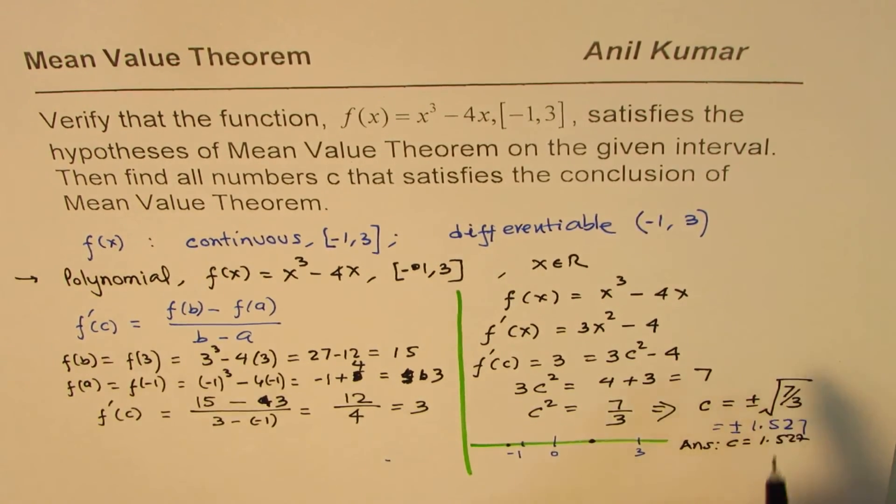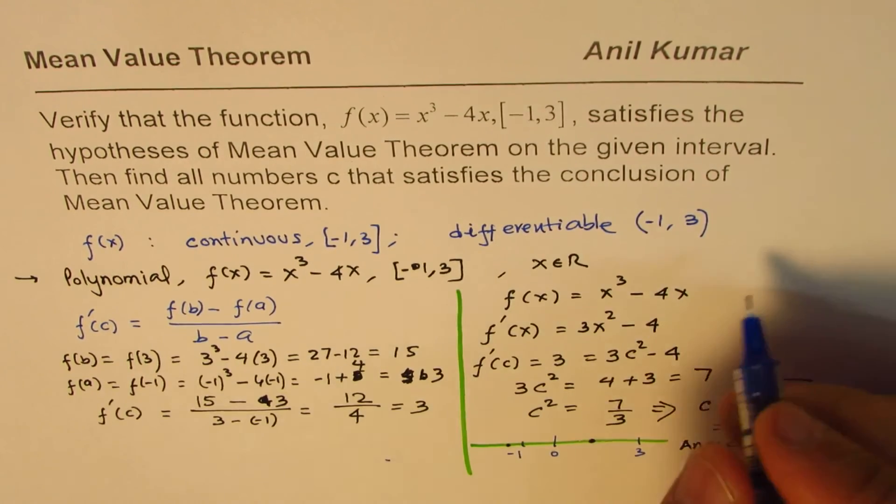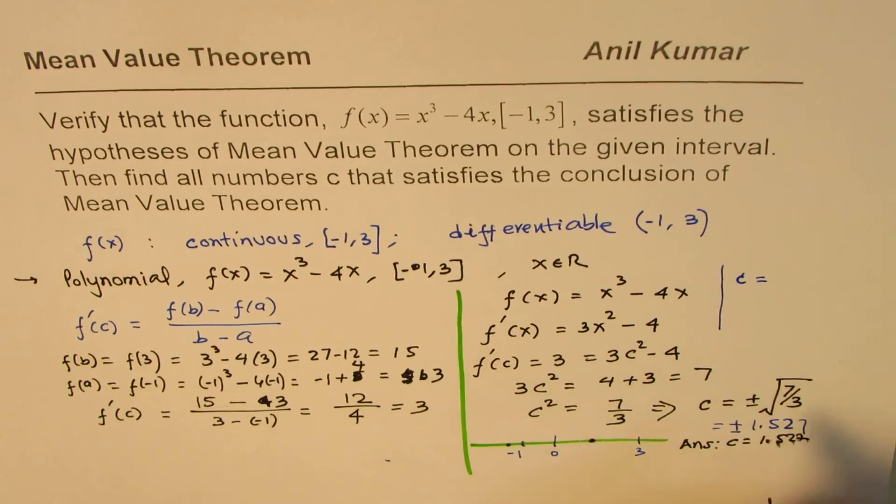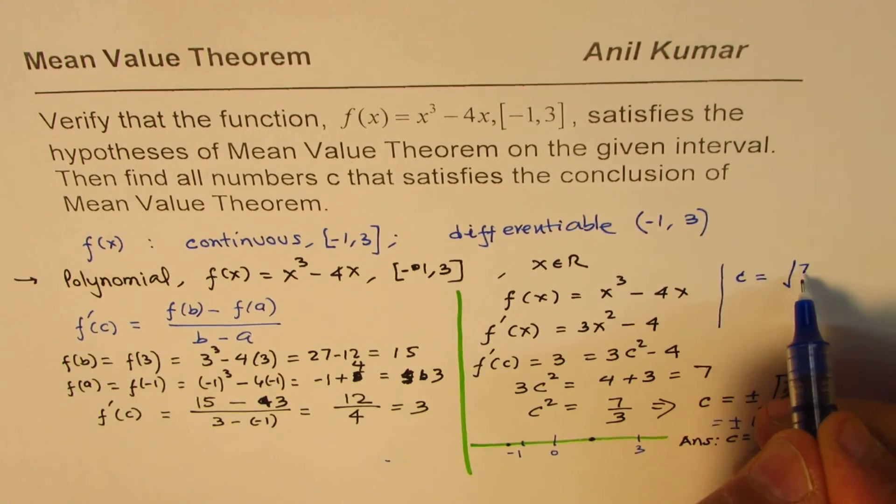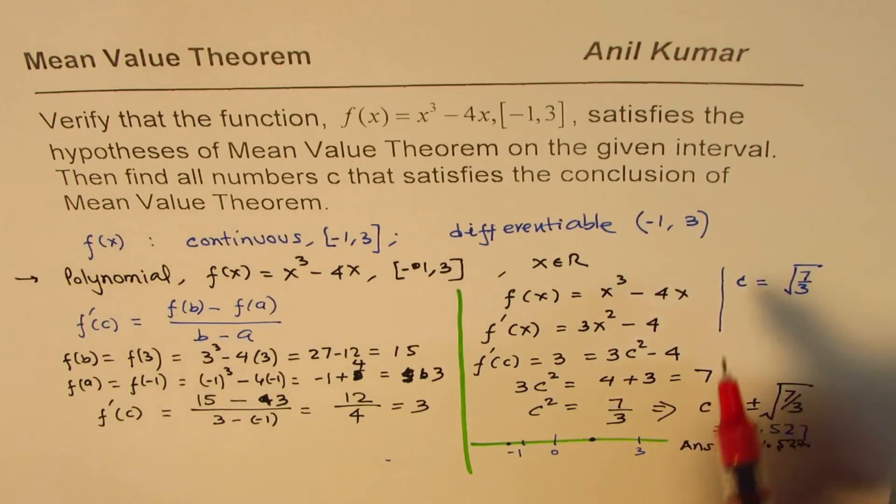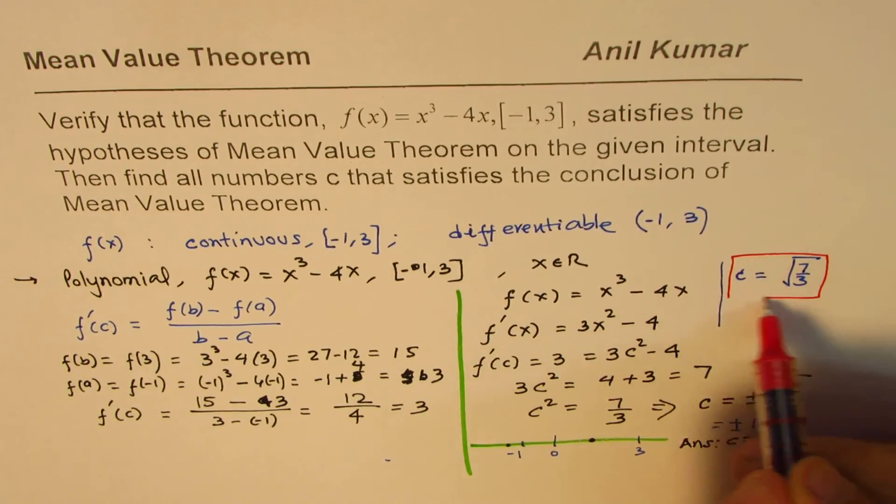So, what we get here is that answer is c is equals to 1.527, or just the plus value. So, let me write down the answer here. So, the point c is equals to square root of 7 over 3. So, that becomes the solution for the given equation. So, that is the answer.